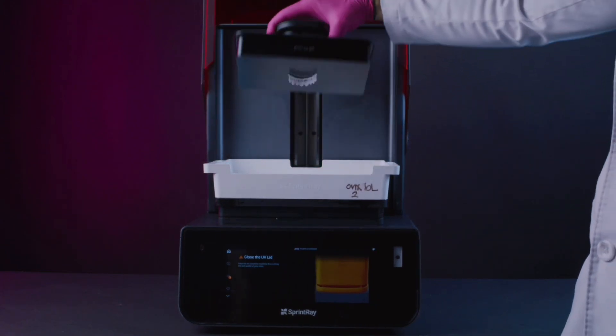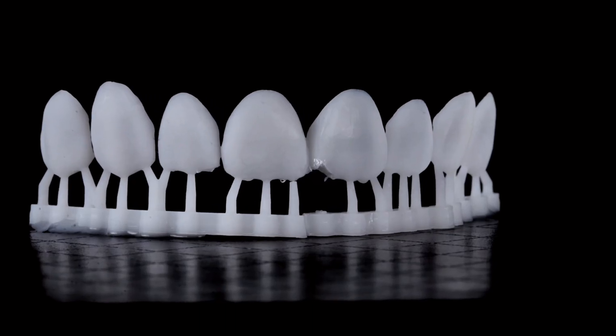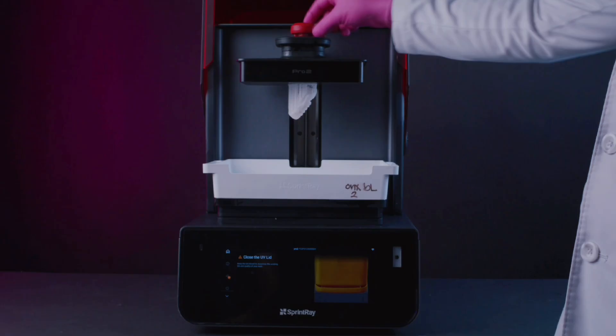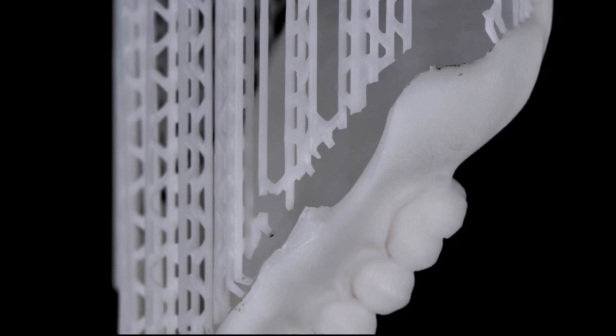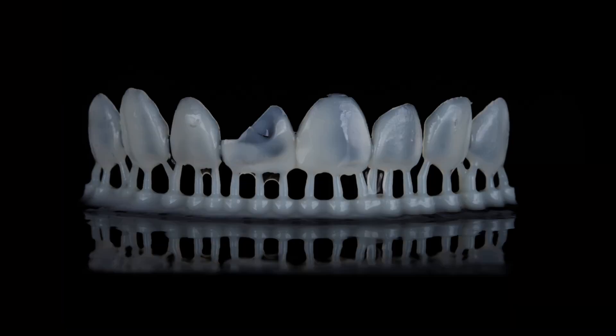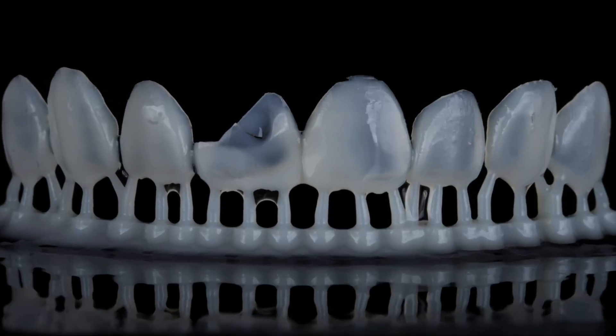Five, you want to make sure that you have adequately supported your prints with enough density. Any large areas that are missing supports will deform or not print. Six, you want to make sure that your support size is correct for the object you're printing. The bigger the object, the bigger the supports.